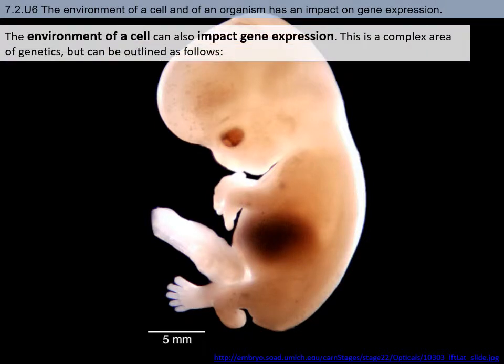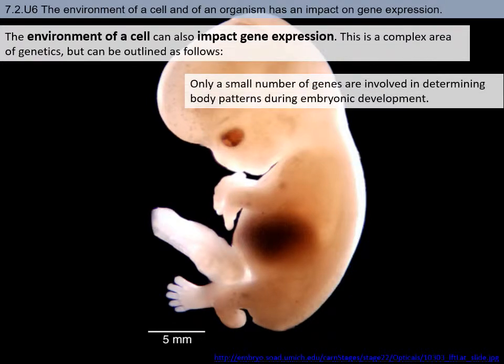The environment in and around a cell and different tissue layers also have a major impact on gene expression. During the development of a human fetus, different regions of the body must be created — the head, tail, arms, legs, and the tissue between digit nubs must disappear to form fingers and toes. Different parts of the DNA are being used to develop those specific regions, and only a small number of genes are really needed to determine the basic body pattern.